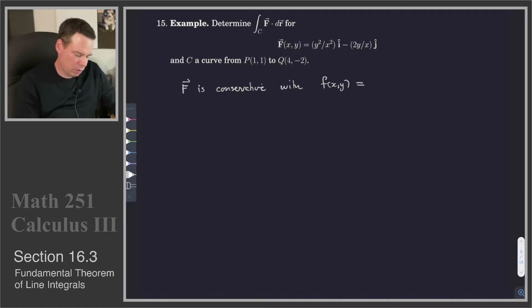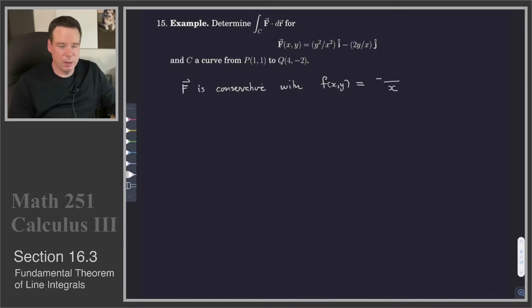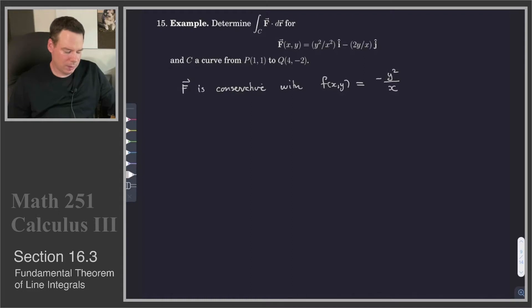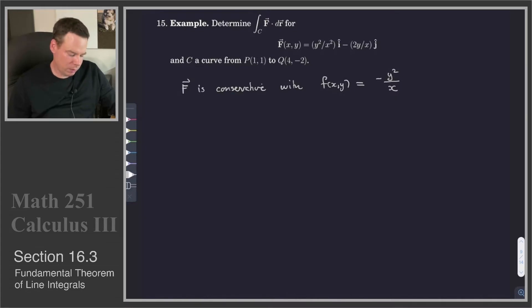Or maybe we can just eyeball this and say: I need my derivative with respect to x to give me -y²/x². That means I should probably get -y²/x, so that the derivative is y²/x². But then I'd also need the y² up top. So just doing the anti-derivative of the first component with respect to x, this is what I'm guessing is the case.